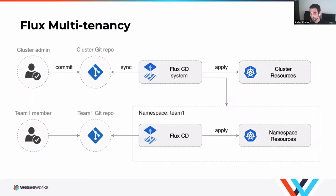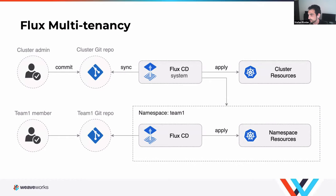Each team has its own namespace, its own Git repo, and its own Flux instance running inside that namespace. For example, if a dev team wants to have an ingress controller, the workflow would be: team one requests that to the cluster admins, and the cluster admin deploys that ingress controller using the cluster Git repo. Afterwards, team one members can create ingress objects inside their namespace. But the team member cannot deploy an ingress controller themselves, because an ingress controller usually has a cluster role binding, which is not possible from a team Git repo.